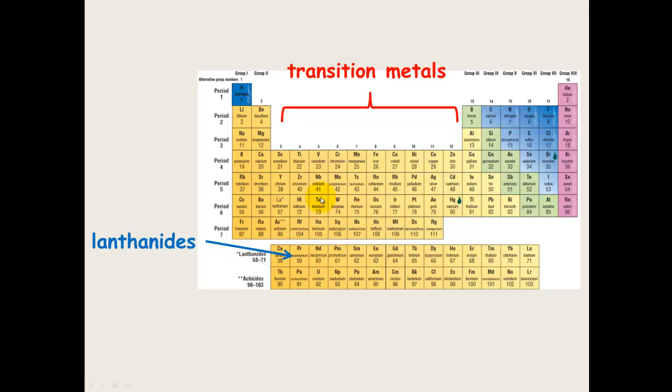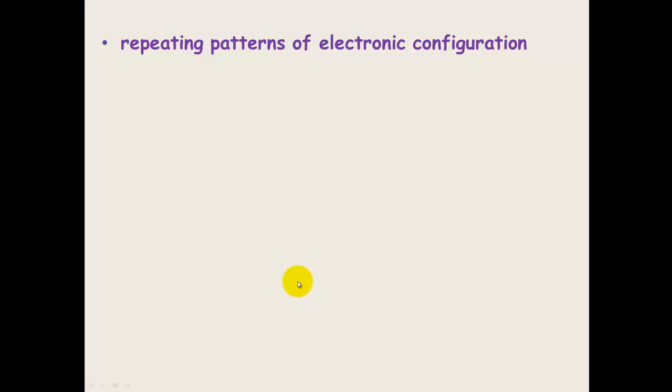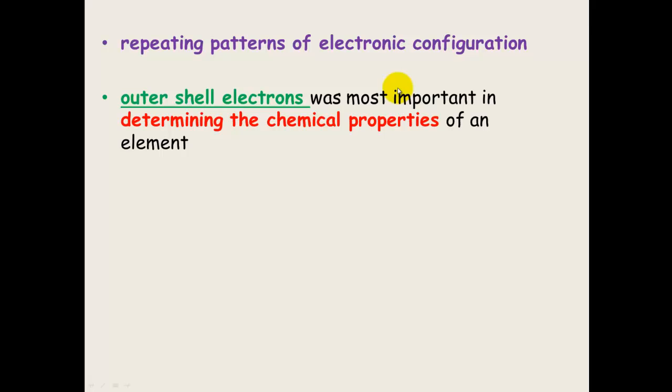These here are called the transition metals. The period down here are called the lanthanides. And these ones here are called the actinides. What was found in the periodic table now is that repeating patterns of electronic configuration. Also, that the outer shell electrons were the most important in determining the chemical properties of an element. So, of course, the periodic reoccurrence of similar properties must be related to the electron configuration.